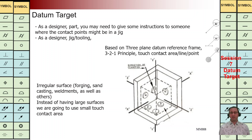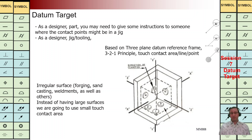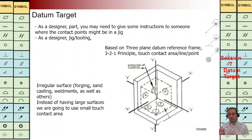Let's consider using a jig to fix a component. If we define a reference plane it will be a large surface — to machine it to have a flat surface is a little bit time consuming and expensive. In this situation we are going to have some target areas to machine just those small areas, saving money and time. That is the main concept of the datum target.